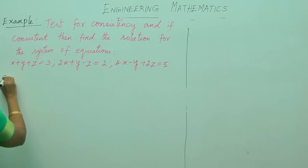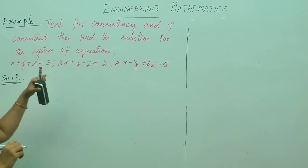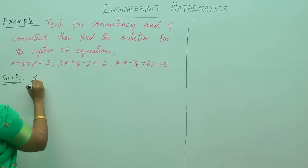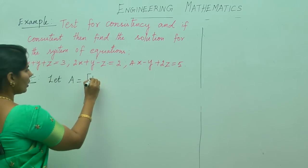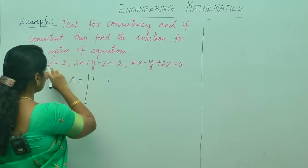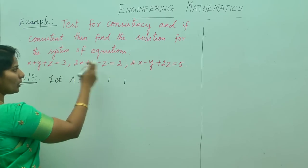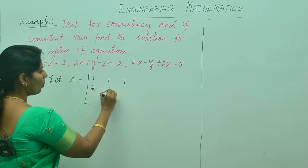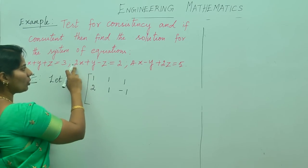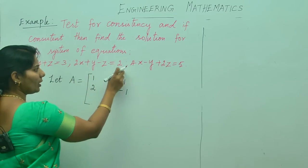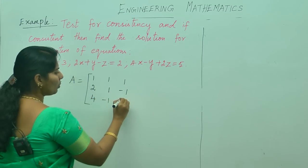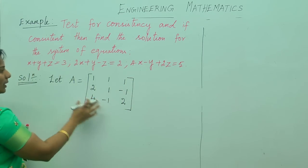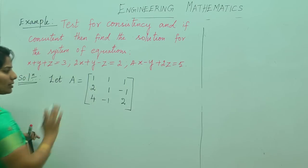What is the first step? You need to write the given system of equations in the matrix form. Let A equal the coefficient matrix. The coefficient of x is 1, coefficient of y is 1, and coefficient of z is 1 for the first equation. For the next equation: 2, 1, minus 1. For the last equation: 4, minus 1, 2.